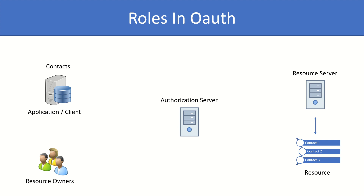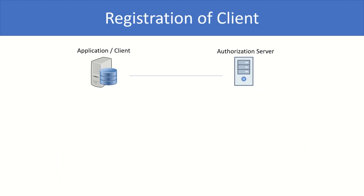So there are four roles in OAuth: the client (your application), resource owners (the users who approve the request), the authorization server (which provides your application an authorization code to access the resource), and the resource server (which hosts the information). Before your application can request access to any resource, it needs acknowledgement from the authorization server. For that, you need to let the authorization server know what your application is — that's what we call client registration.